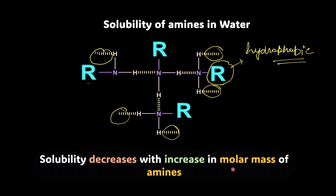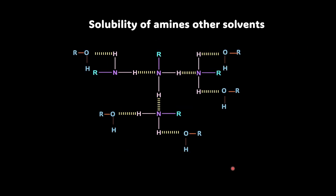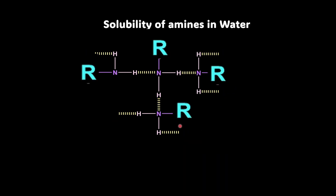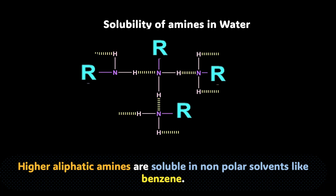Lower aliphatic amines are also soluble in solvents like alcohol and ether because hydrogen bonding is possible with those solvents. But if the R group becomes large enough, the higher aliphatic amines need a solvent that is compatible with hydrophobic alkyl groups. The solvent that can be used in such cases is benzene.